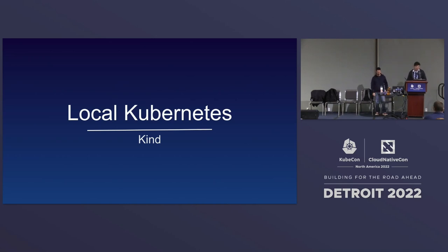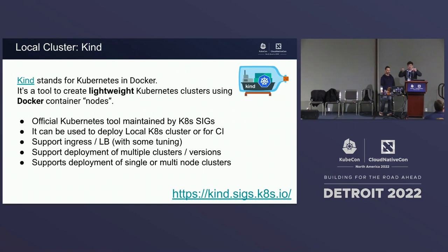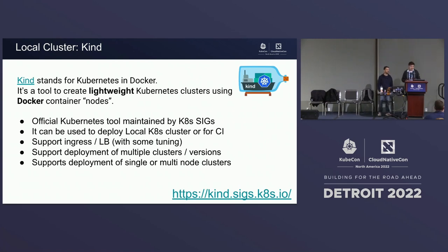For today's tutorial, we decided to choose another option: KIND — Kubernetes in Docker. KIND is a tool to create super lightweight Kubernetes clusters. The reason they're super lightweight is because they actually deploy as Docker images themselves. If you want to deploy a control plane, it's going to be one Docker image; if you want a node, it's another Docker image. It's supported by Kubernetes SIG and can be deployed for local Kubernetes clusters.